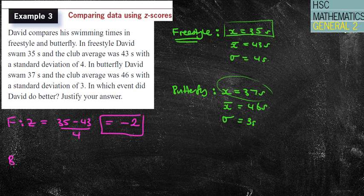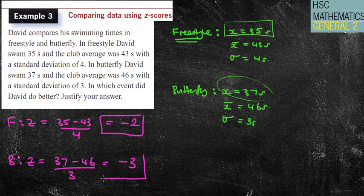My butterfly z-score will be 37 seconds take away 46 over 3. So 37 take away 46, divide that by 3, equals minus 3. So I'm minus 3 standard deviations.